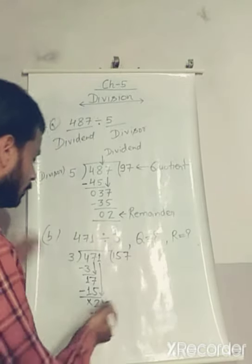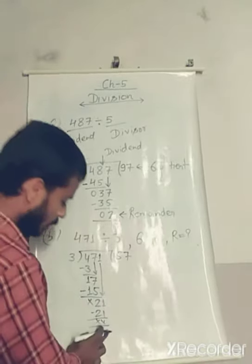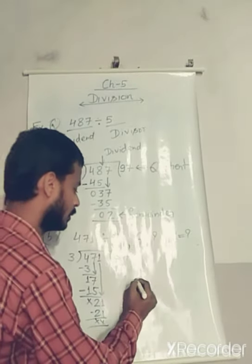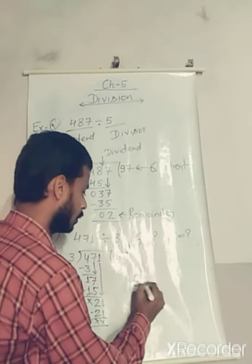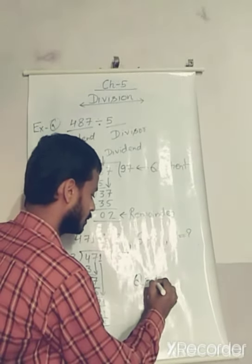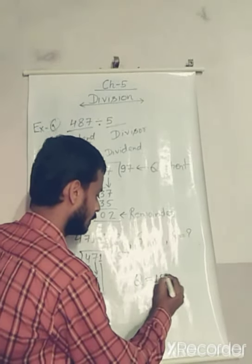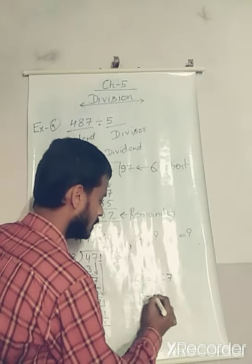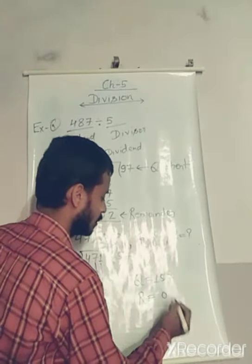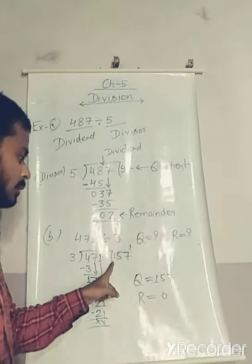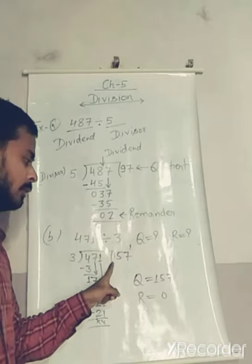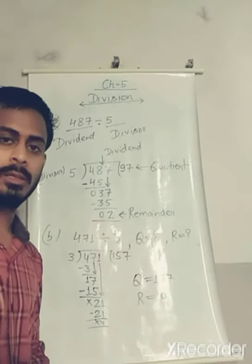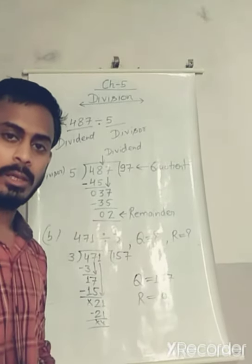Now you can see there is no remainder. So the quotient is 157 and the remainder is 0.